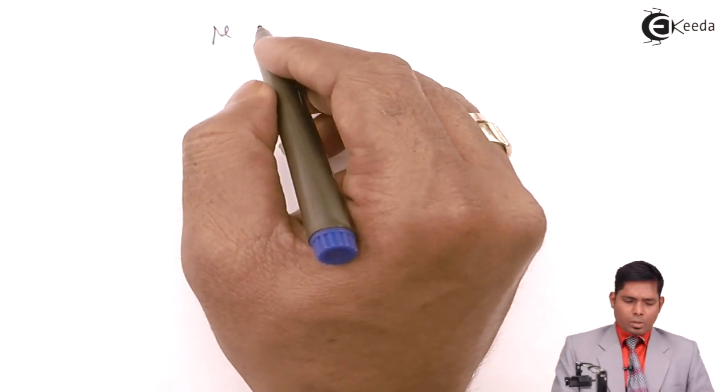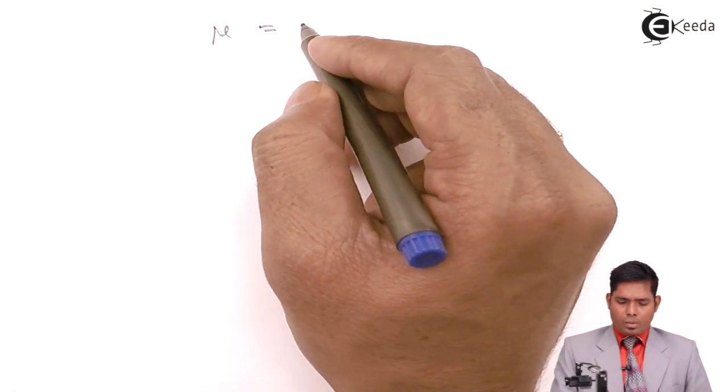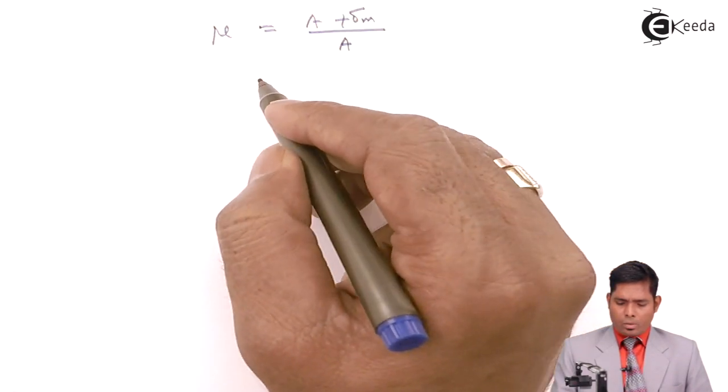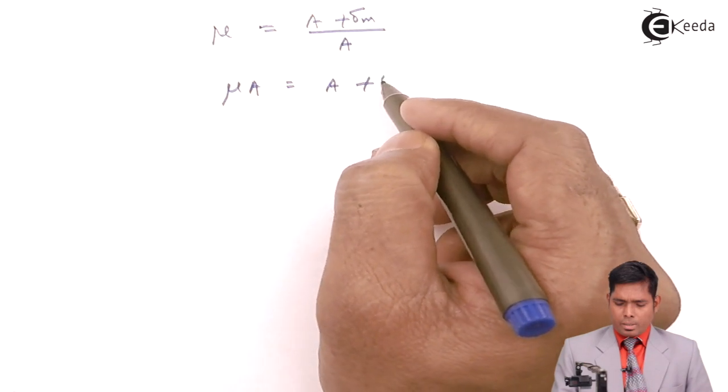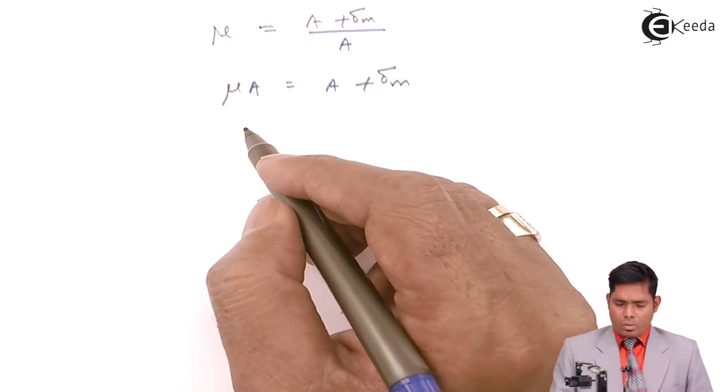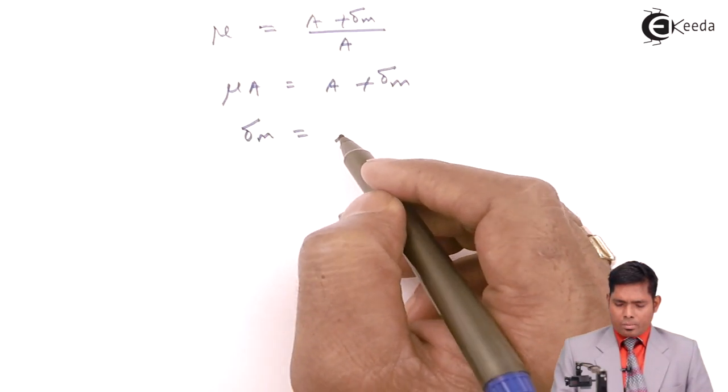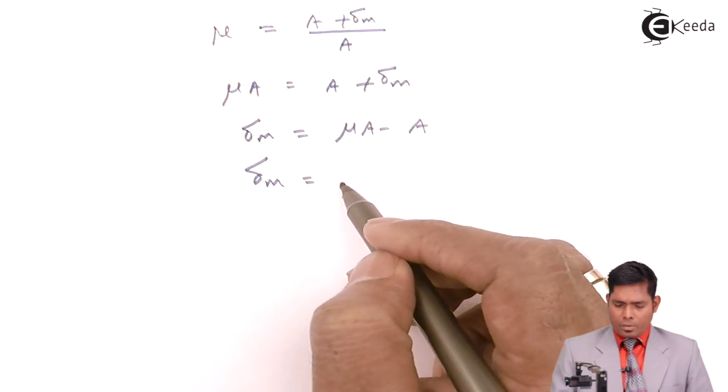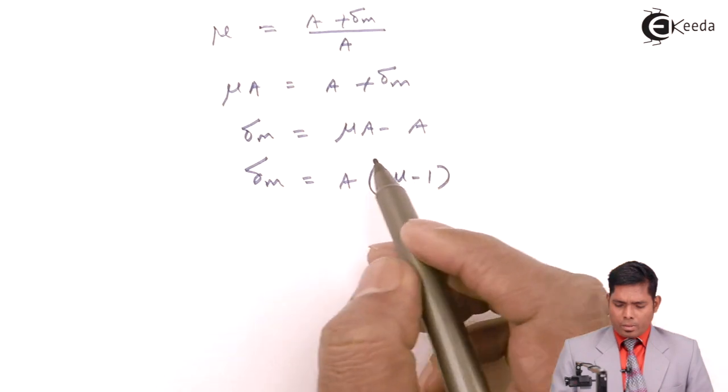Mu equals (A plus delta m) divided by A, or mu A equals A plus delta m, or delta m is mu A minus A, or delta m is A times (mu minus 1).